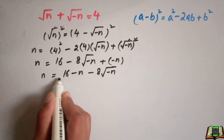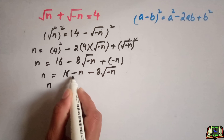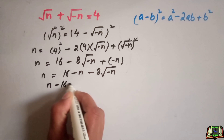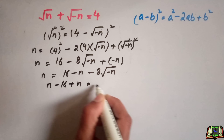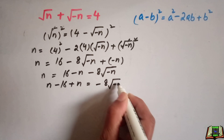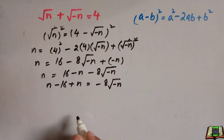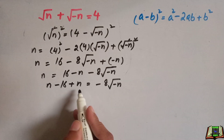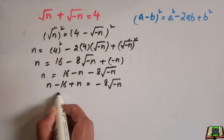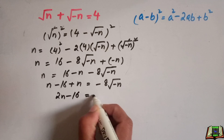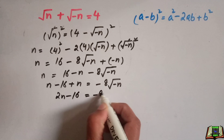We will take these two terms to the left hand side, so the sign will change: n minus 16 plus n is equal to minus 8 square root of minus n. Adding the two like terms n plus n, we get 2n minus 16 is equal to minus 8 square root of minus n.